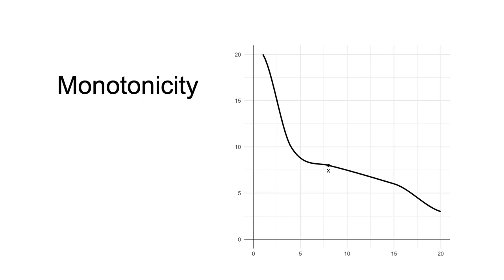Monotonicity implies downward sloping indifference curves. This is because any increase of a good in your bundle would take you to a higher indifference curve.